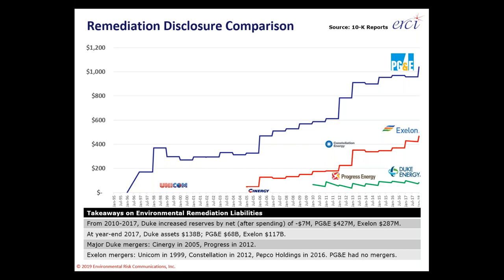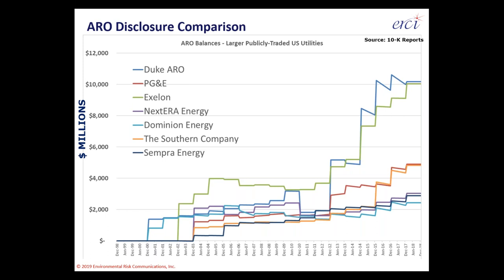For asset retirement obligations across seven publicly traded utilities, the pattern mirrors what we saw with waste management and oil and gas companies: 20 years ago these liabilities didn't formally exist and weren't accrued for, and now they're $2–10 billion liabilities that are still growing. I would expect these numbers to double or even triple their current balances over the next generation — the next 20 to 25 years.